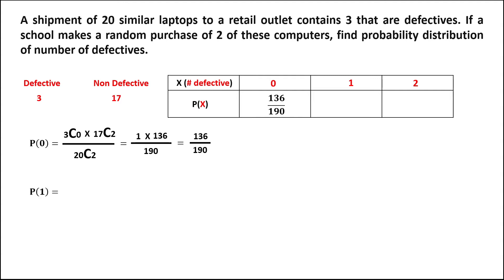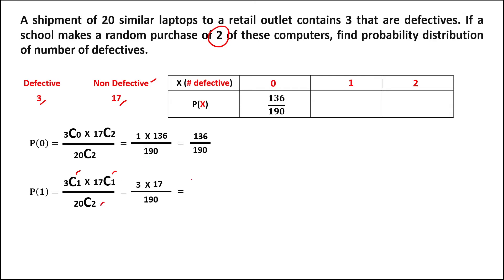For 1 defective computer: we choose 1 from the defective computers — 3 choose 1 — and since only 2 computers are purchased, we also choose 1 from the non-defective computers — 17 choose 1 — over 20 choose 2. Simplifying: 3 choose 1 equals 3, times 17 choose 1 equals 17, over 190. So 3 times 17 equals 51 over 190. This is the probability for 1 defective computer.